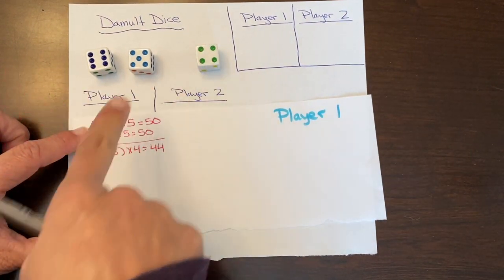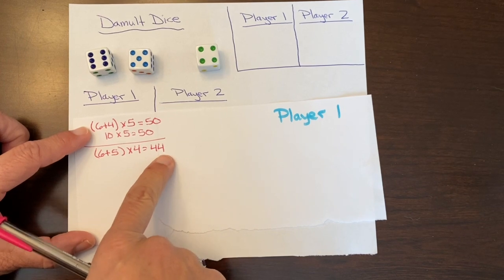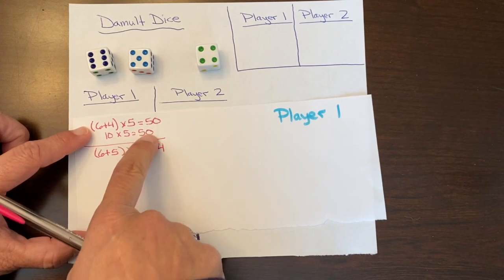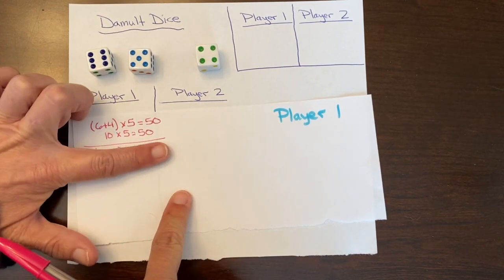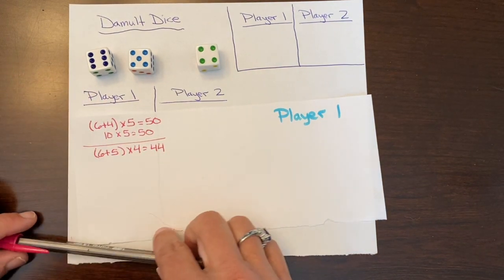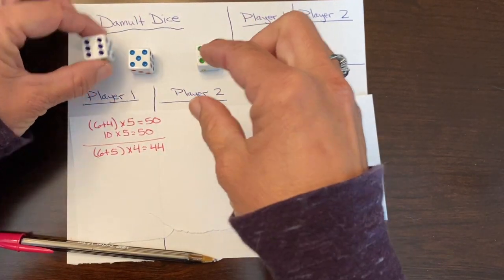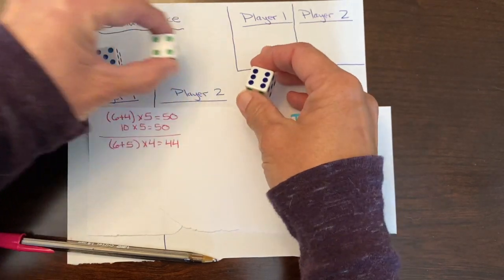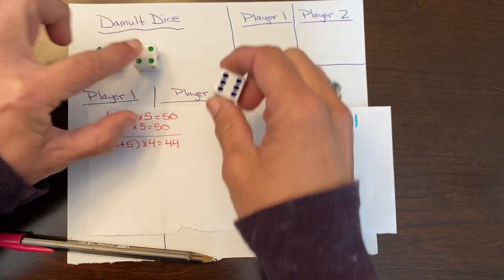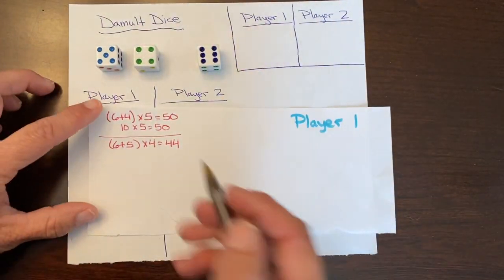So this way of multiplying is not going to result in a higher sum than this. So I am definitely not choosing this one. Okay, so let's see our last combination that we can make is 5 plus 4 and then multiply that by 6.